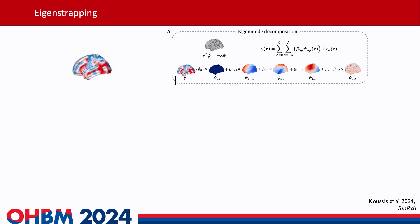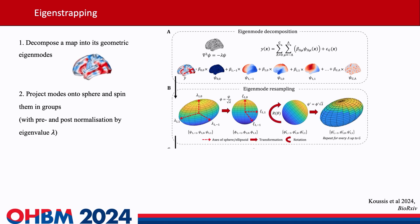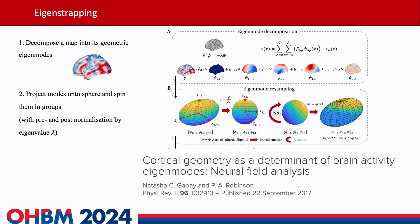We retain those coefficients and do nothing with them for now. However, we exploit the group and frequency structure that Gabbay and Natasha Gabbay and Robinson — Peter Robinson — in 2017 showed, which demonstrated that cortical eigenmodes are equivalent to first order perturbations of spherical harmonics.